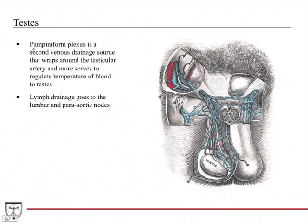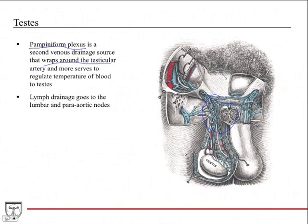The pampiniform plexus is another venous structure to be aware of. While the testicular vein is the main venous drainage source, the pampiniform plexus has a different function — it serves as a temperature regulator. It wraps around the testicular artery and acts to cool the warm arterial blood coming into the testicle. The goal is to maintain an ideal temperature for spermatogenesis, since it cannot be too warm. Lymphatic drainage goes to the lumbar and para-aortic nodes, which is important for testicular cancer.